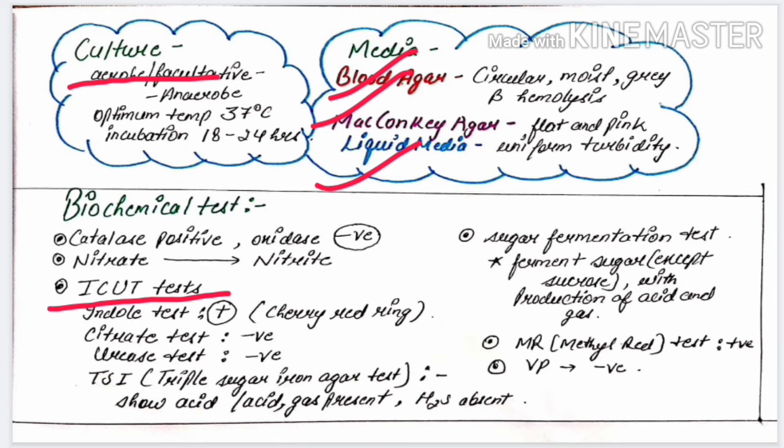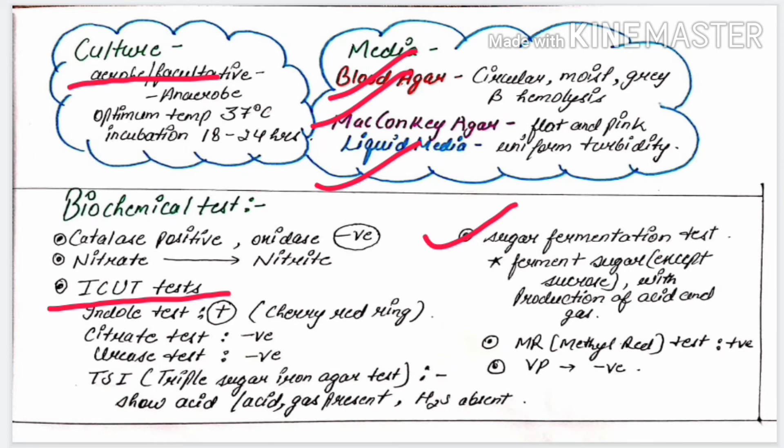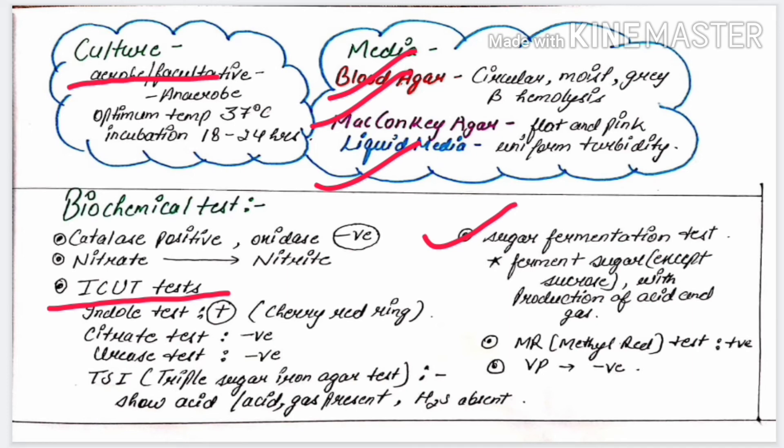Next we have the sugar fermentation test. E.coli can ferment most sugars like glucose, mannitol, lactose, and maltose. But it cannot ferment sucrose, and it ferments the above sugars with the production of acid and gas. Next we have the MR, that is methyl red test. E.coli is positive for methyl red and negative for VP.